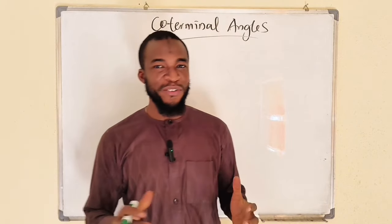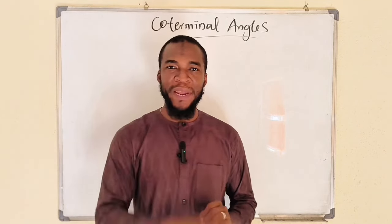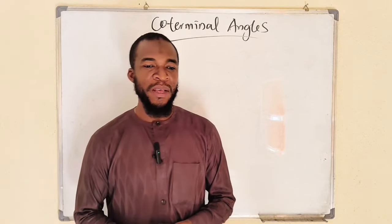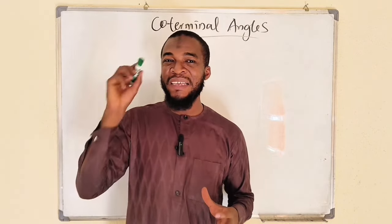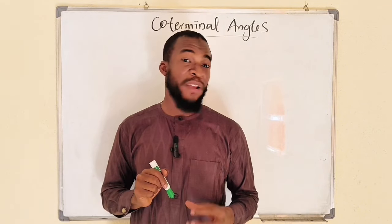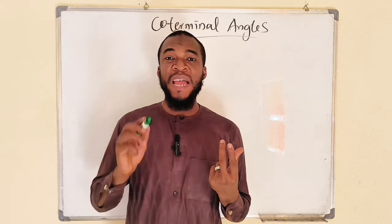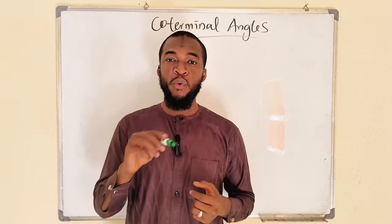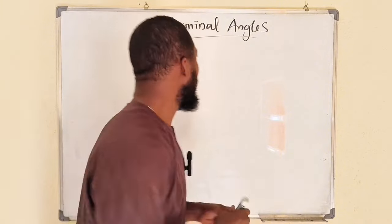Hello, good day viewers. Still on trigonometry, today we are going to talk about coterminal angles. Coterminal angles are angles that are located in the same position. To obtain coterminal angles, you can add or subtract 360 degrees in degrees, or 2 pi in radians.